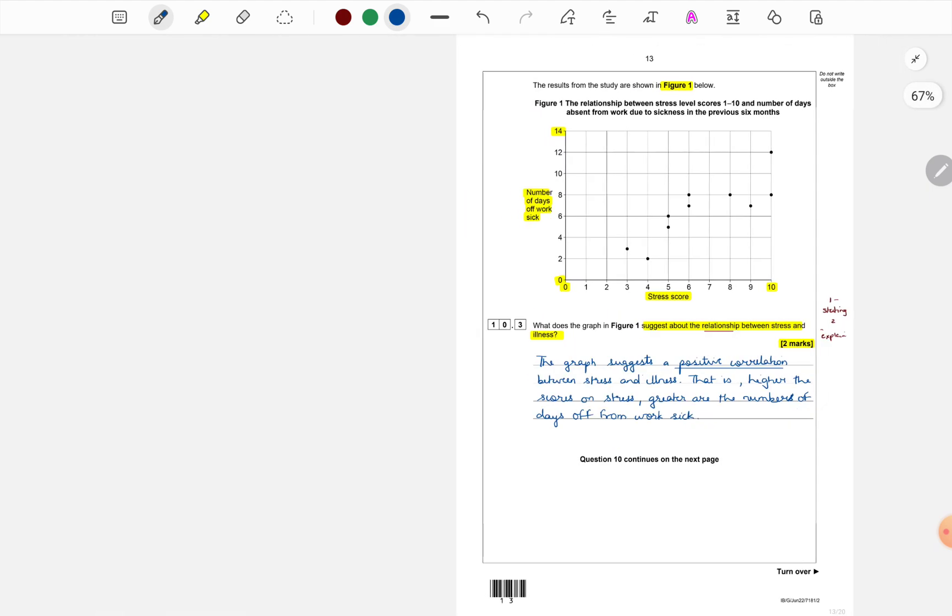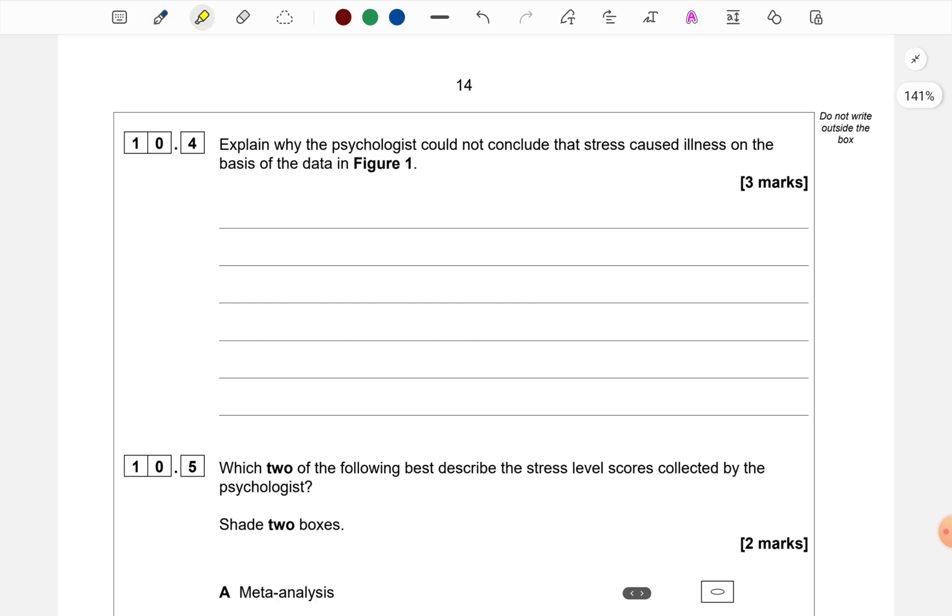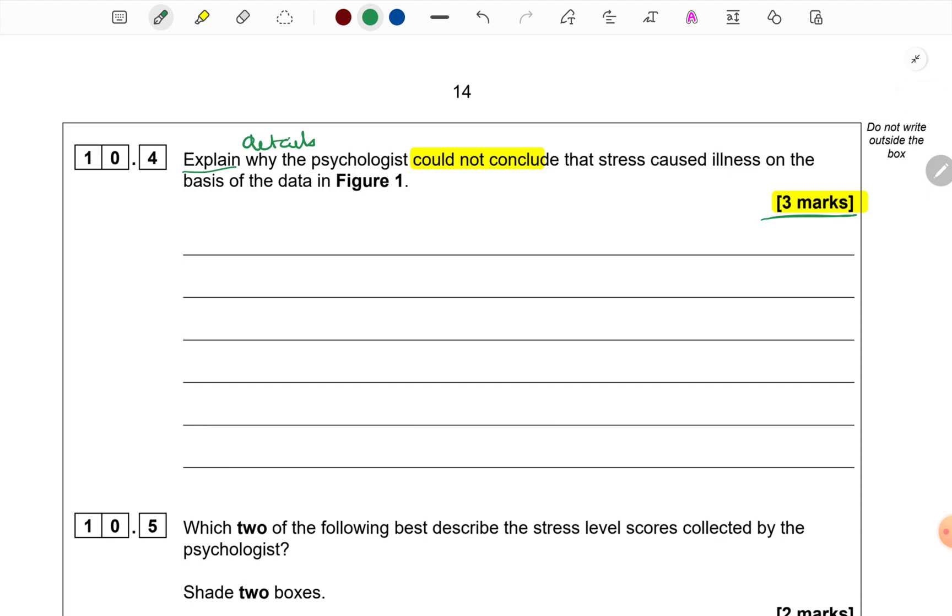Let us move towards the next question. Explain why the psychologist could not conclude that stress caused illness on the basis of data in figure 1. Explain means we have to give details. Three marks means we have to give at length. Why the psychologist could not conclude the answer is very obvious if we have to give in one line because the study is purely correlational. I will get one mark for stating that. Next, I need to explain why we cannot in this particular scenario say that a conclusion of cause-effect cannot be made.